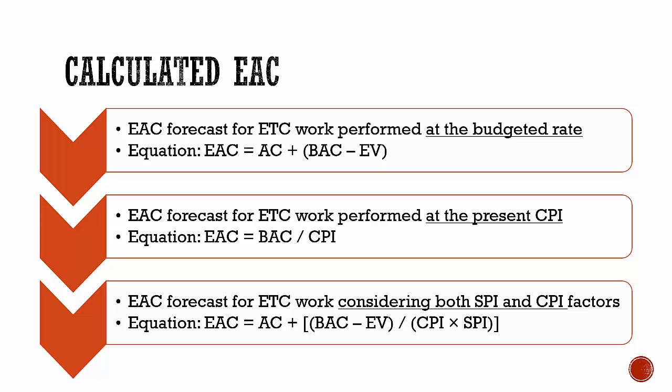The third EAC forecast considers that the ETC work will be performed at an efficiency rate that considers both the cost and schedule performance indexes. This method is most useful when the project schedule is a factor impacting the future effort. There are also some variations of this method that take the CPI and SPI at different weights, for example 80% to 20%.